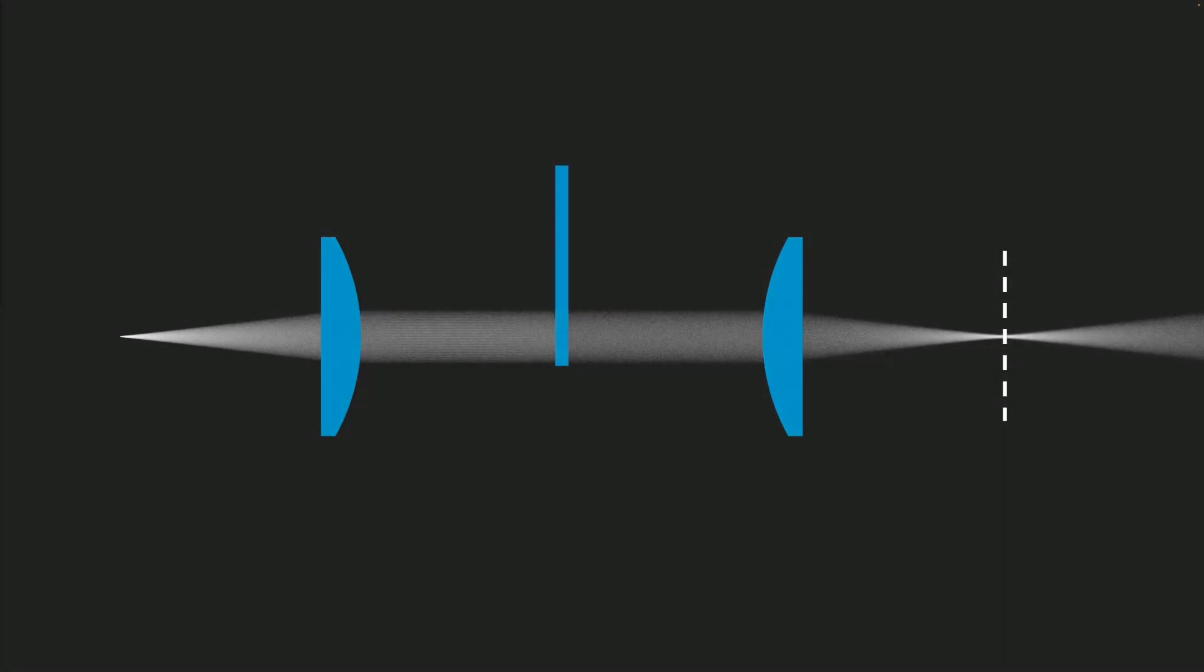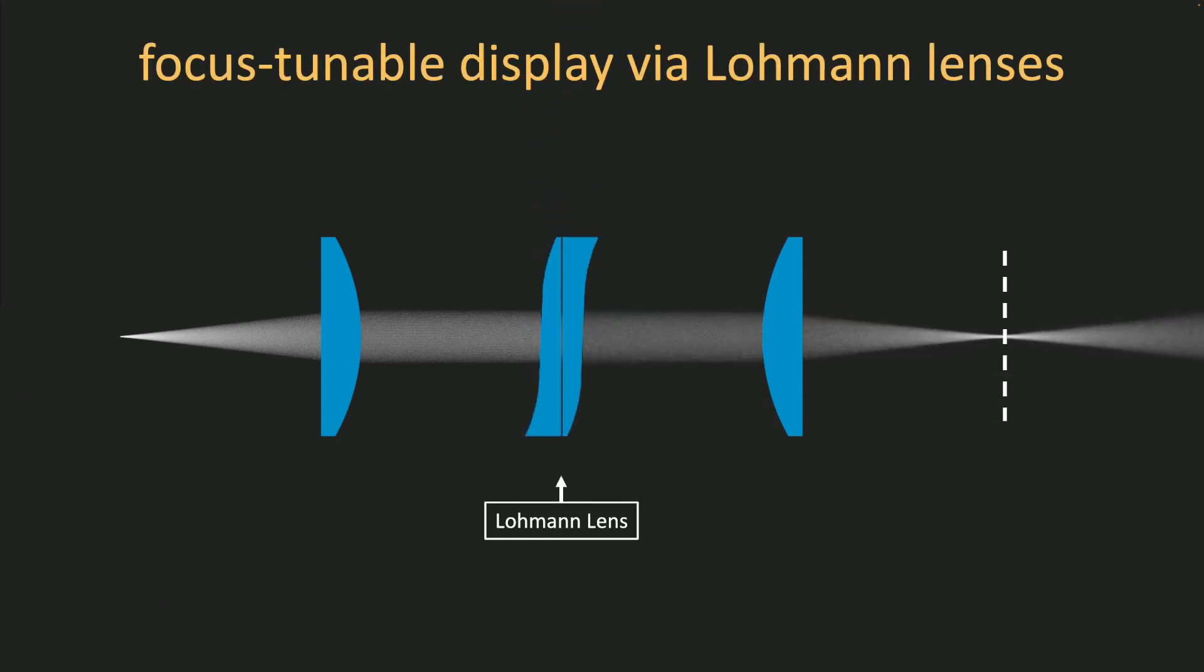Another approach is to insert a Lohmann lens into the system, which consists of two optical elements known as cubic faceplates. Focus is adjusted by laterally shifting these two elements with respect to one another.